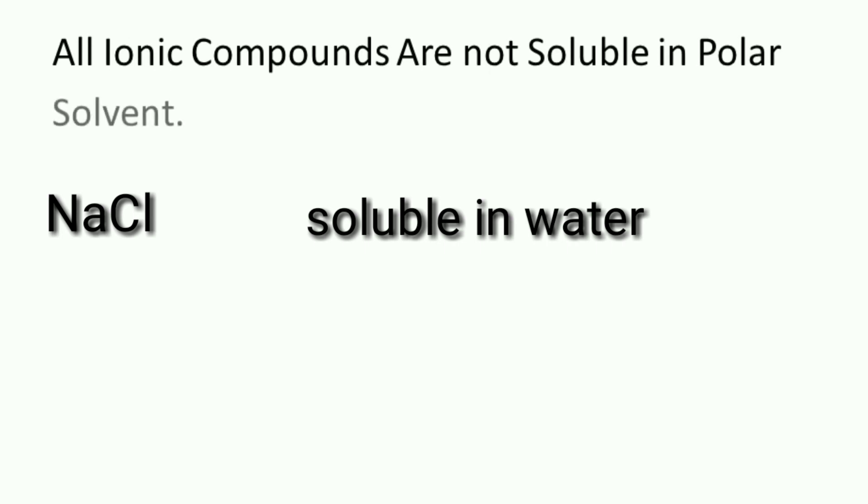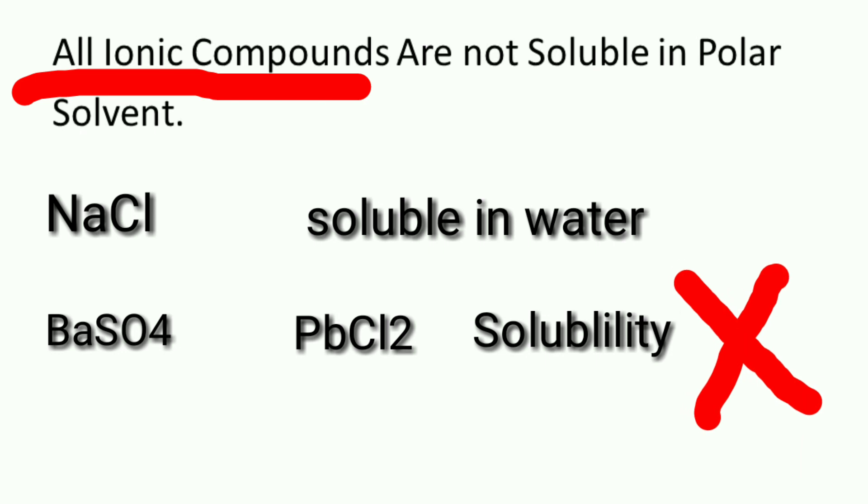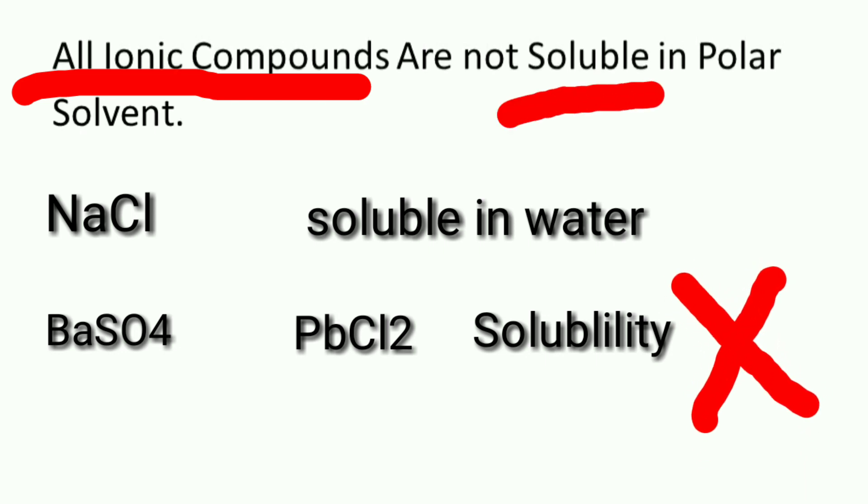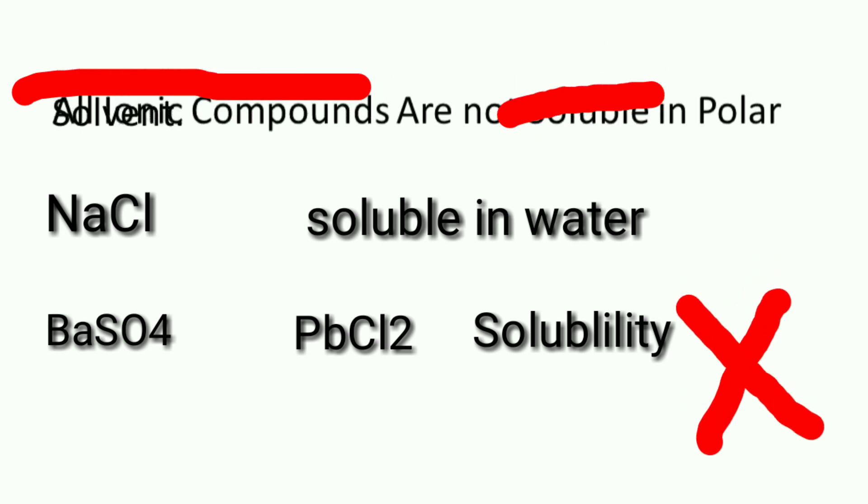You may see here sodium chloride is dissolved in water, but ionic compounds like barium sulfate and lead chloride in cold water are not soluble. So we may candidly say that every ionic compound is not soluble in polar solvent. This was the conclusion. I hope you get that.